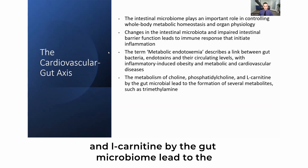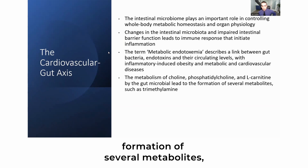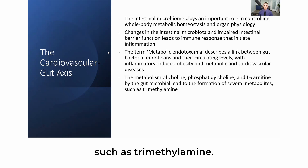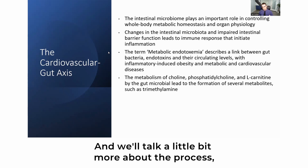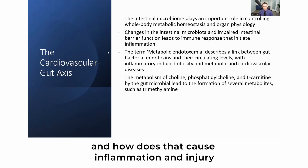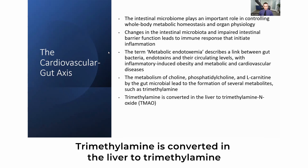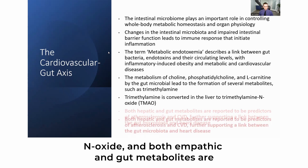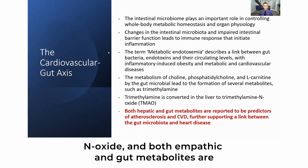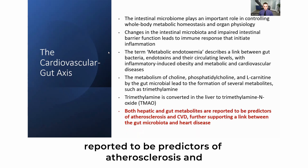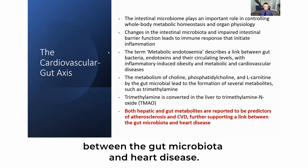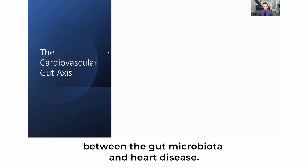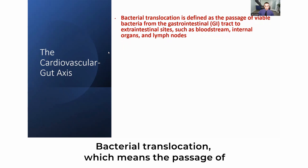The metabolism of choline, phosphatidylcholine, and L-carnitine by the gut microbiome leads to the formation of metabolites such as trimethylamine. Trimethylamine is converted in the liver to trimethylamine N-oxide (TMAO), and both hepatic and gut metabolites are reported to be predictors of atherosclerosis and cardiovascular diseases, further supporting a link between the gut microbiota and heart disease.